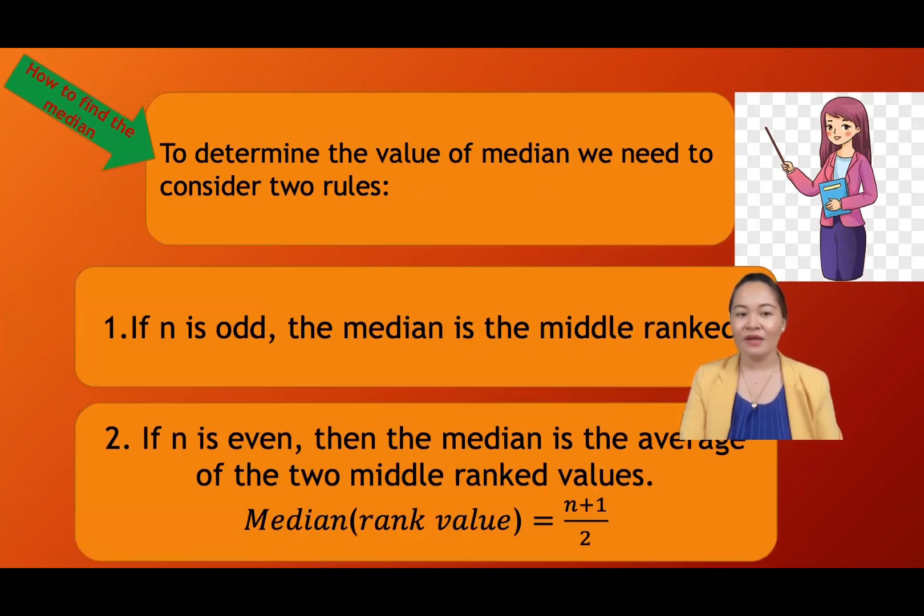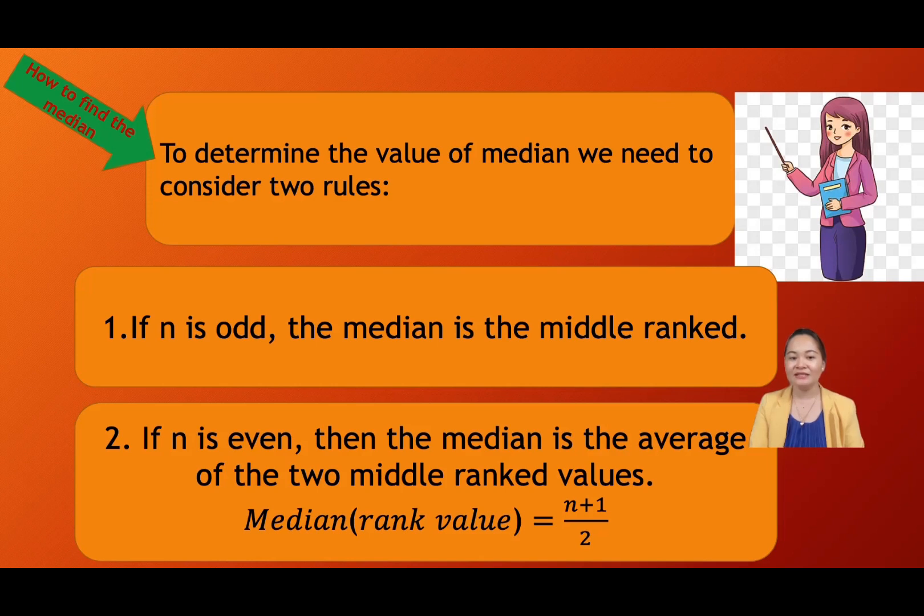So how to determine the value of the median, we need to consider two rules. If n is odd, the median is the middle rank. And if n is even, then the median is the average of the two middle rank values. Average of the two middle, since that is even, you are going to find the average of the two middle rank.